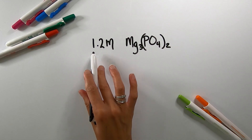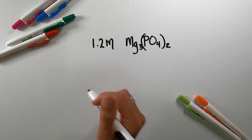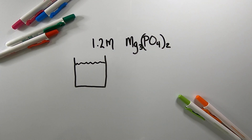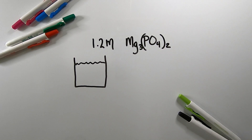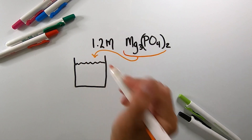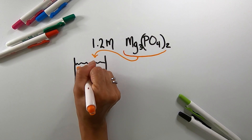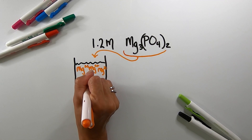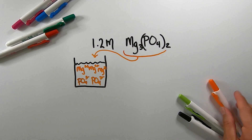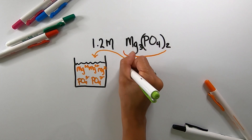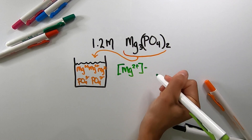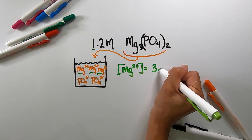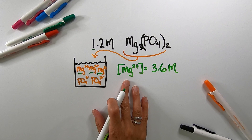Now suppose I have a 1.2 molar solution of magnesium phosphate. I'm going to draw a beaker — a little fatter this time because there are going to be more ions dissolving in solution. I'm going to take one molecule of magnesium phosphate and dissolve it in the water. I will get three magnesium ions and two phosphate ions. If I were asked for the concentration of magnesium ion in solution, I have three magnesium ions times 1.2, which is 3.6 molar concentration of magnesium ion in solution.